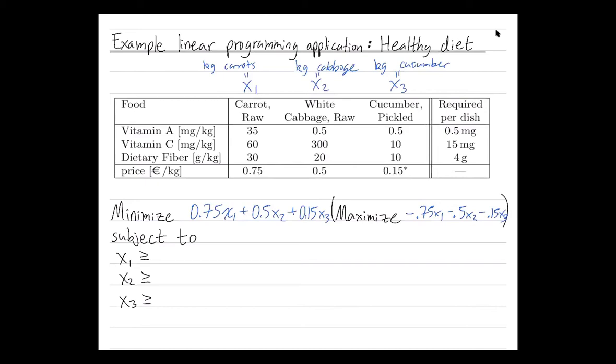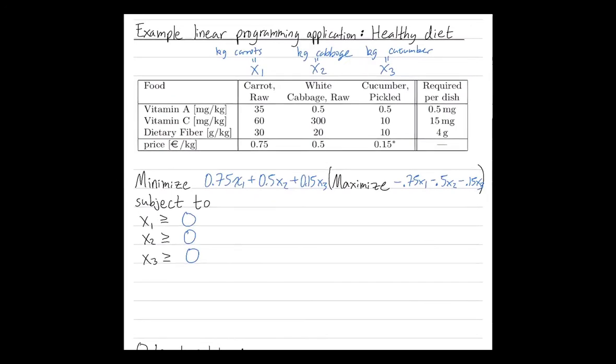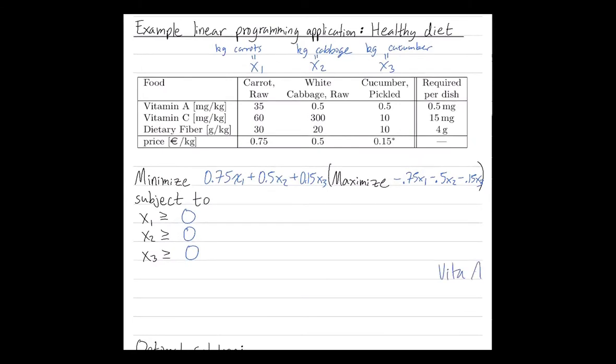But we have these constraints. We need to serve folks a healthy vegetable side dish. So our constraints are, first we can't serve them a negative amount of carrots or cabbage or cucumber. That would just be unethical, impossible. Also, we have a vitamin A constraint. We need to serve enough vitamin A. We also have a vitamin C constraint. And we also have a fiber constraint.